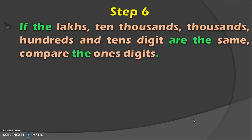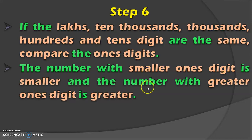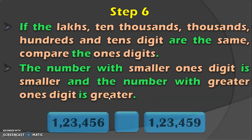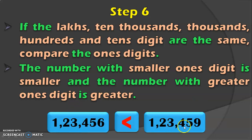The last situation is where the lakhs, 10,000th, 1,000th, 100th and 10th digits are all the same. In such cases, compare the 1's digit. The number with the smaller 1's digit is smaller and the number with the greater 1's digit is greater. Here, the digits 1, 2, 3, 4, 5 are the same in both numbers across those five places, so we look at the 1's place where we have 6 and 9. Since 6 is lesser than 9, we conclude 1,23,456 is lesser than 1,23,459.